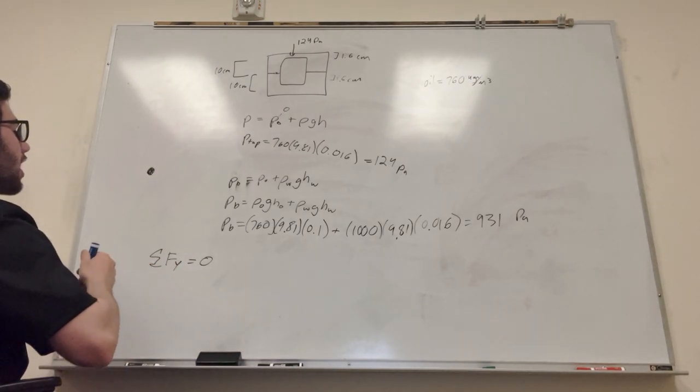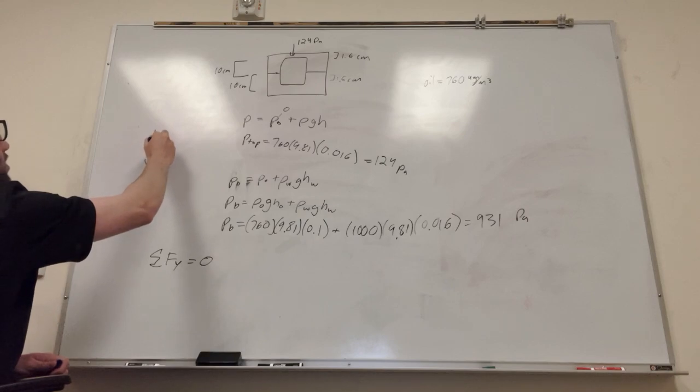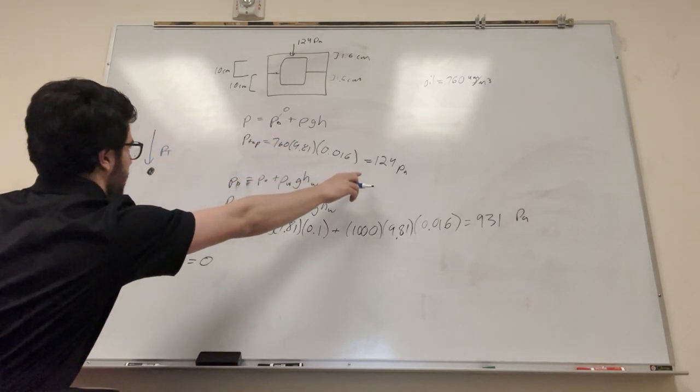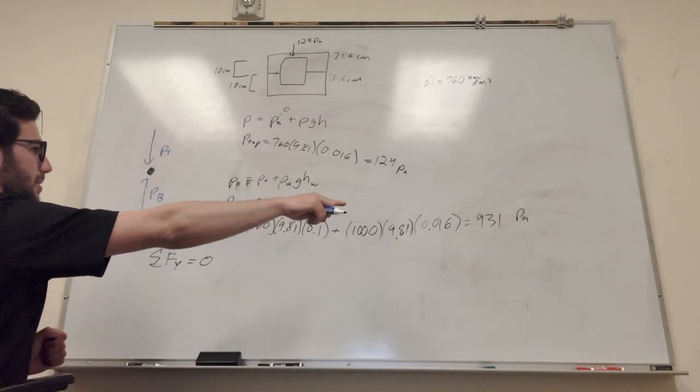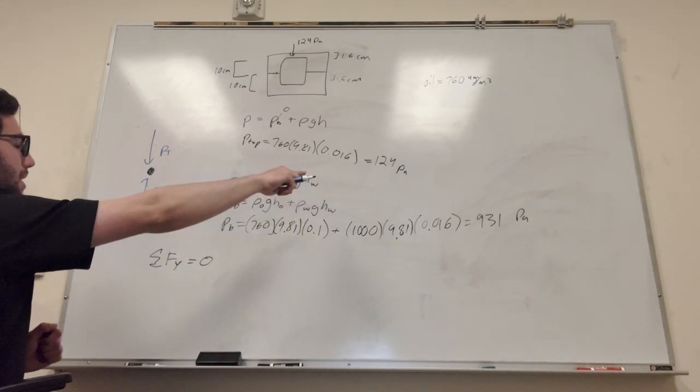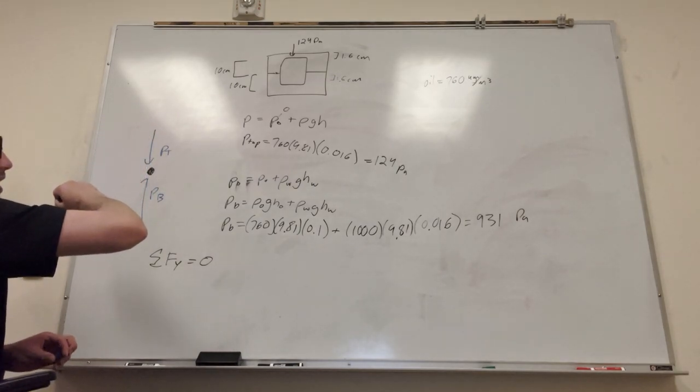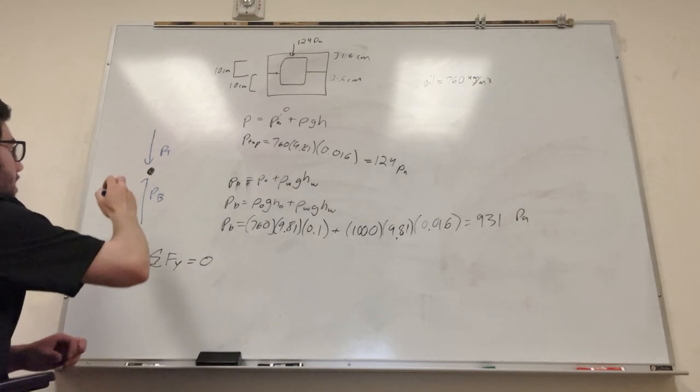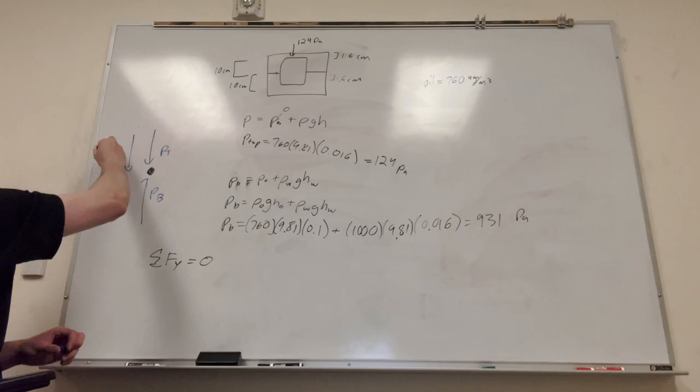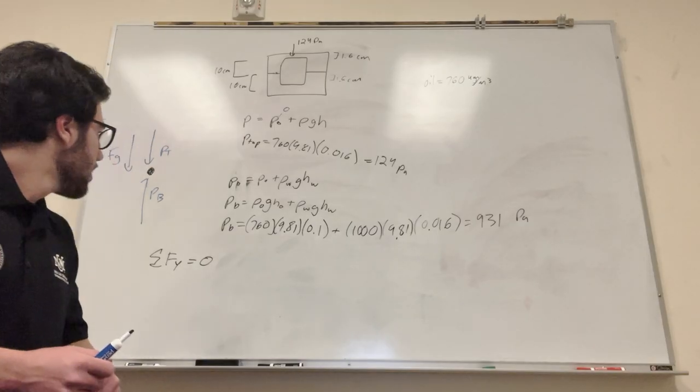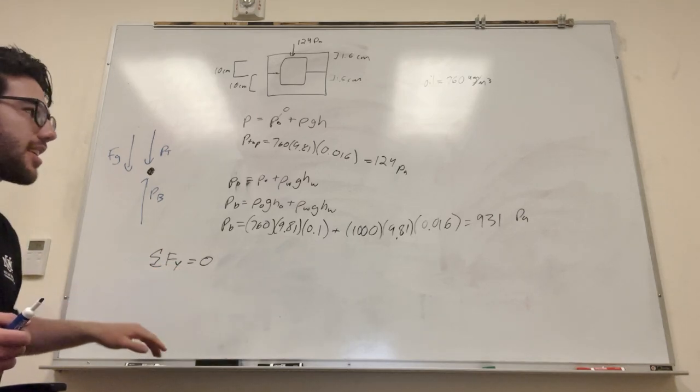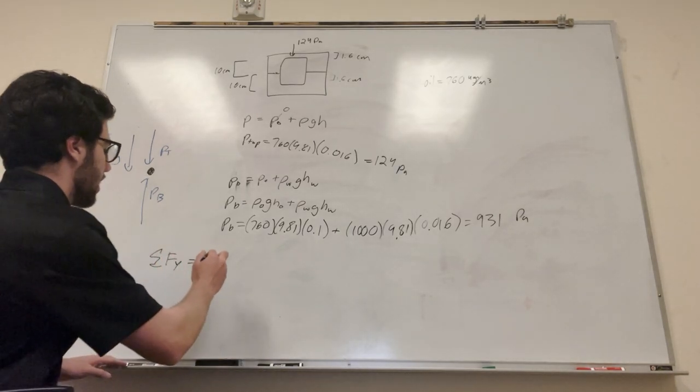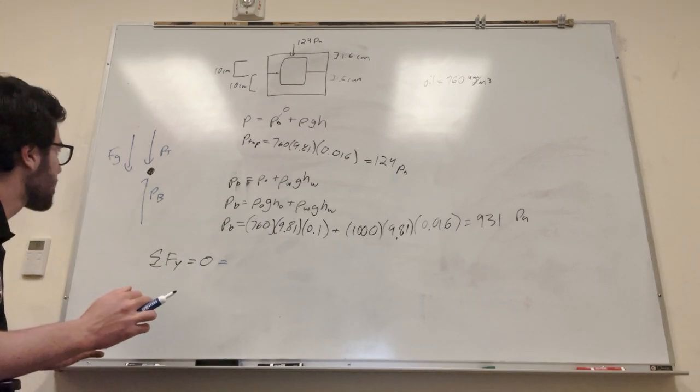So let's make a free body diagram and see what's going on with our block. Okay, so we have pressure at the top, pushing it down, which is this number that we found here. And we have the pressure at the bottom, pushing it up. And we know that the pressure at the bottom is way bigger than the pressure at the top, so there's gotta be another force pushing down on it that's making it at equilibrium. And of course that is the force of gravity.